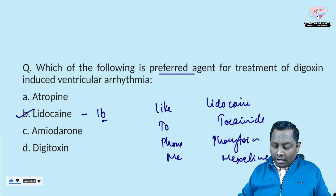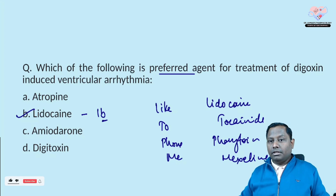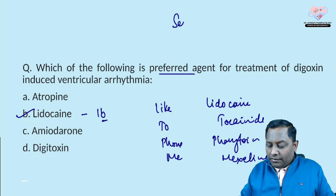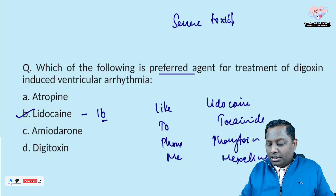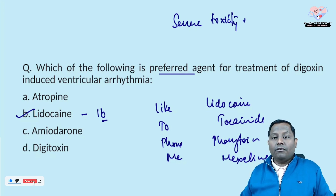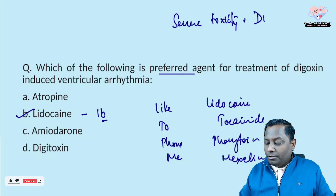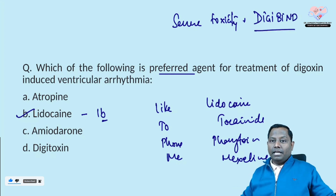Digitoxin is not utilized for the treatment of digoxin-induced ventricular arrhythmia as it is highly toxic. However, if the examiner asks about digoxin severe toxicity where the heart rate is going very low — say 35-40 — then in that scenario we use the antidote known as Digibind. Remember the antidote chart from the previous episode.